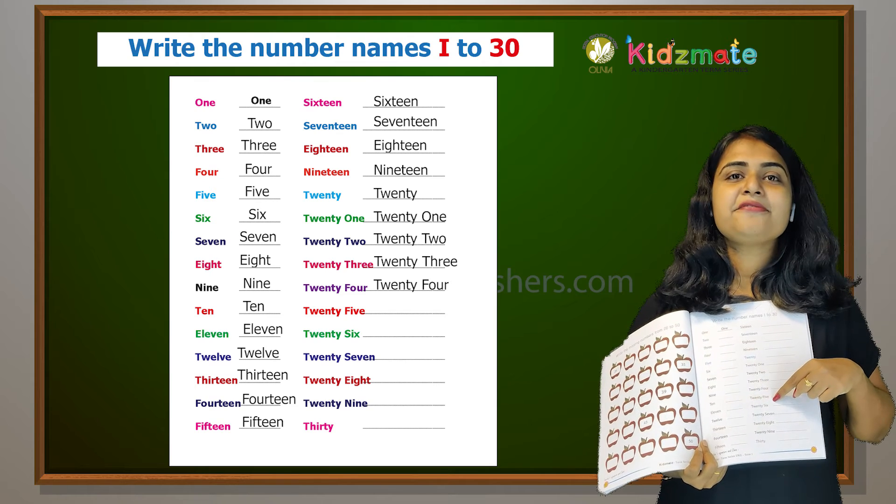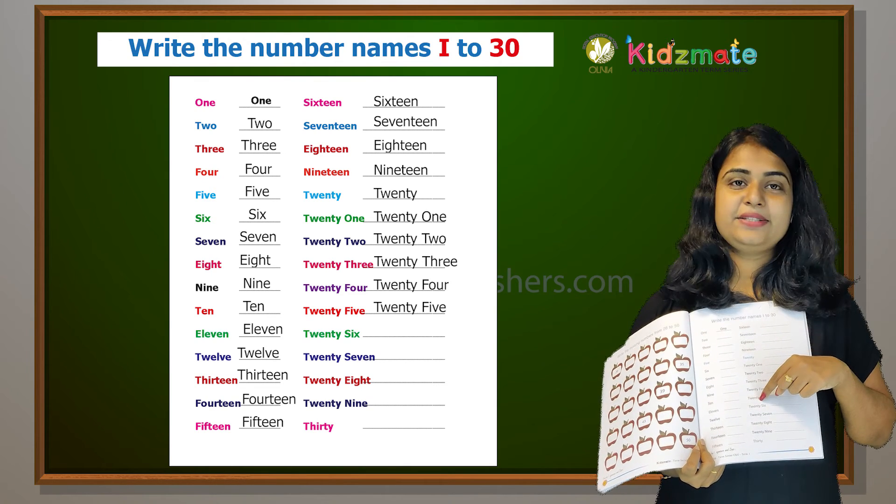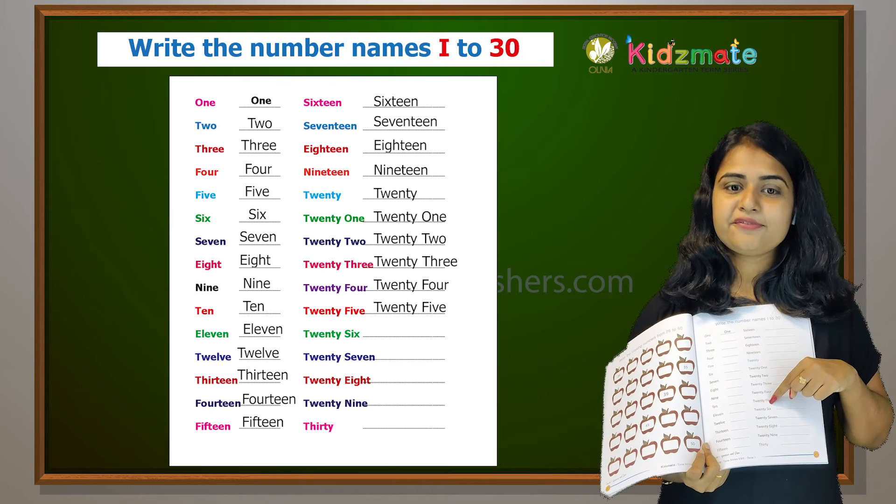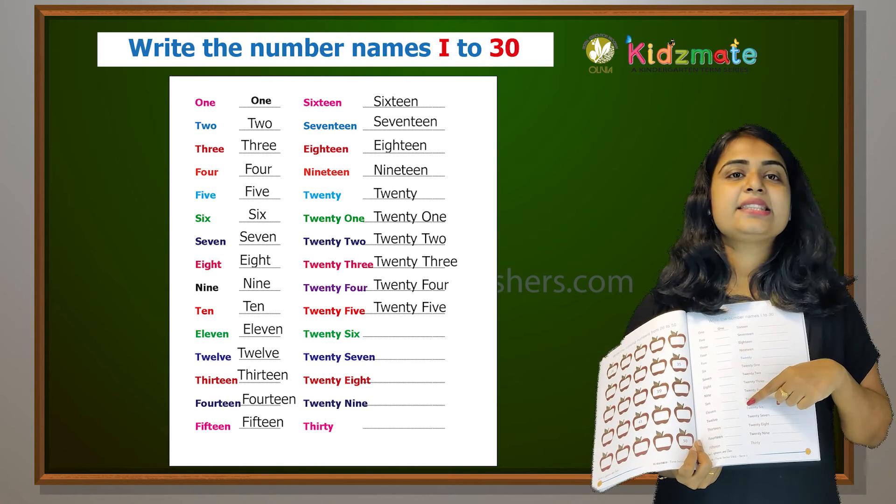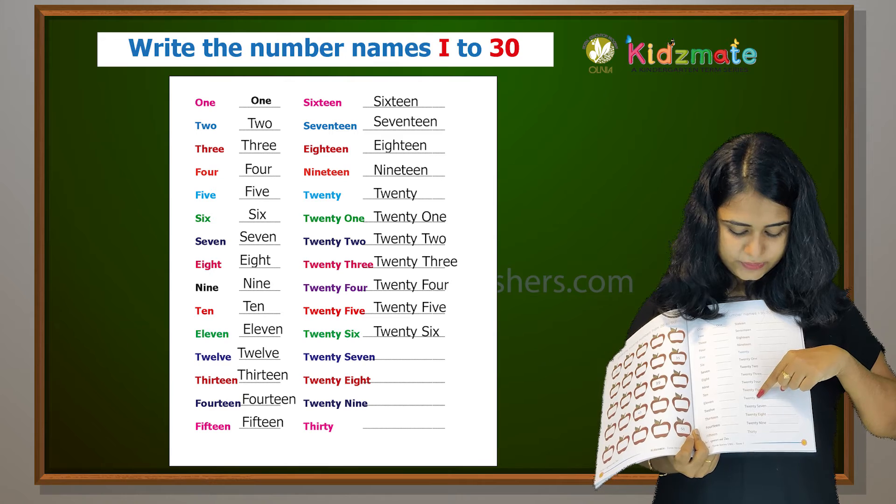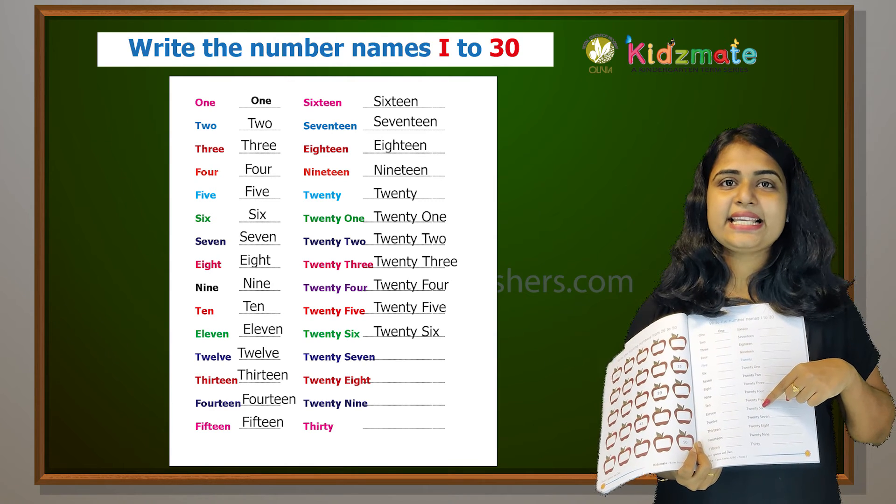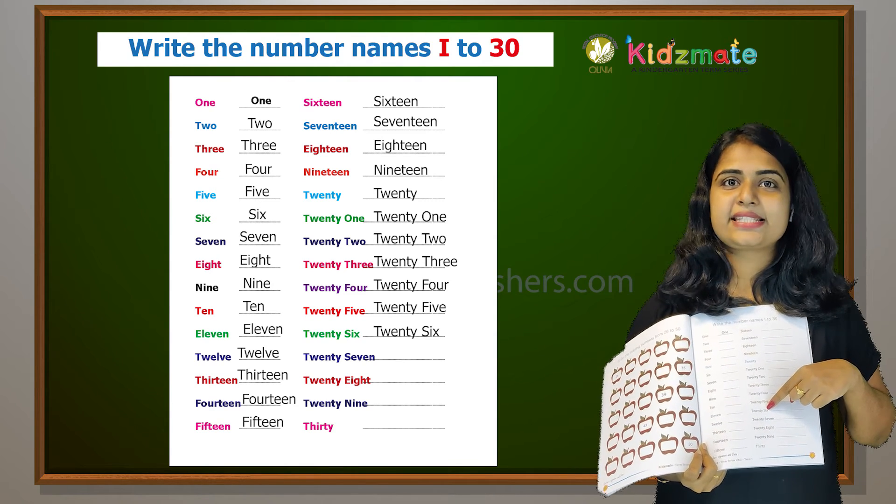Then twenty-five, T-W-E-N-T-Y and F-I-V-E, twenty-five. Twenty-six, T-W-E-N-T-Y and S-I-X, twenty-six.